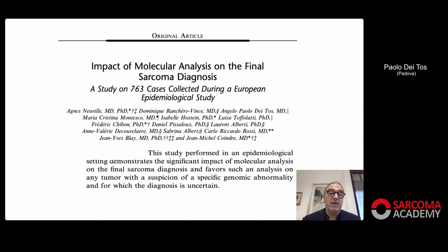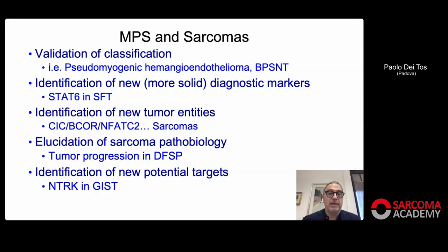One thing is to say that for academic reasons we go deep into the molecular aspects of sarcomas; another is to say every sarcoma should be molecularly analyzed for diagnostics — which I don't think is the case. The wrong message would be: without molecular diagnostics you can't do proper sarcoma diagnosis. Saying this would essentially prevent 80% of the globe from providing patients with accurate diagnosis. That said, massive parallel sequencing and sarcomas work well together: for validation of classification, identification of new diagnostic markers like STAT6 in solitary fibrous tumor, identification of new entities like CIC, BCOR, and FATC2 sarcomas, and elucidating sarcoma pathobiology.